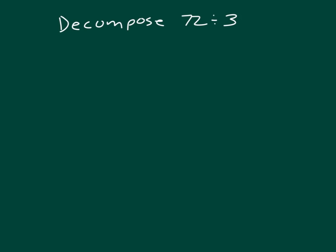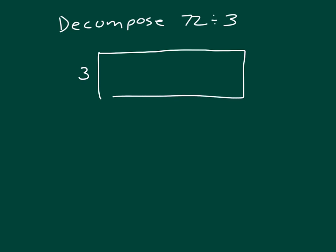Here, we're asked to decompose 72 divided by 3. So we'll start with that same process where we'll draw the area model for the whole thing. What were we dividing? 72, because we're trying to think what times 3 does give us 72. This is our whole one here that we're trying to figure out.